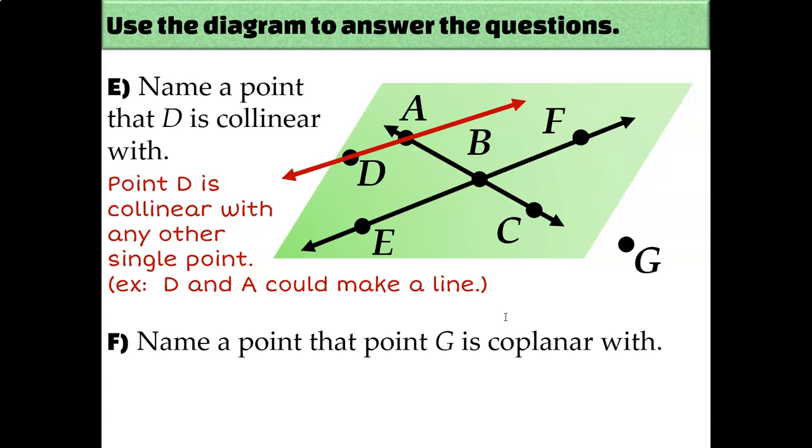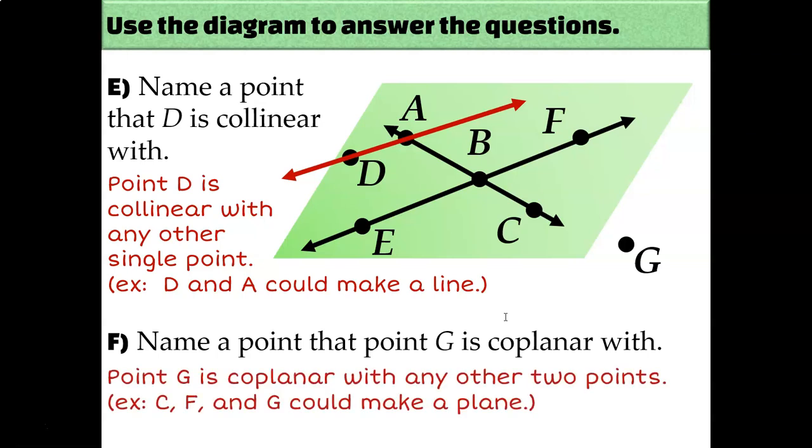We've got a similar question up next that says name a point that G is coplanar with, and again that might feel like a trick question because G isn't on the same plane with all the other points. But remember that it takes three points to make a unique plane. So you can pick any two other points that you want to. I'm going to pick point C and point F. They're the closest points to point G. And I could draw a plane that goes between those three points.